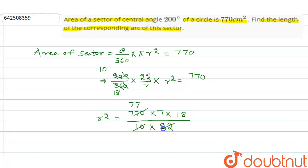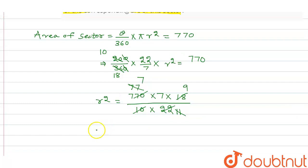This is, if this is 11, this is 9, and this is 7. So r is equal to root of 7 into 7 into 9, that is equal to 7 into 3 is equal to 21.